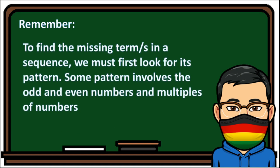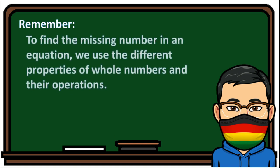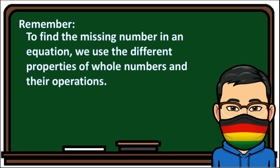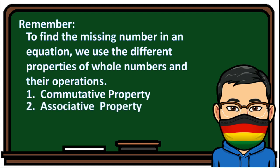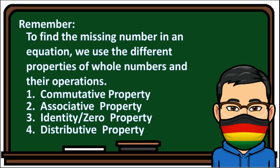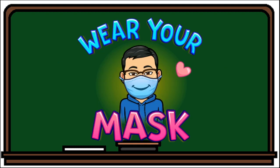Remember: to find the missing term or terms in a sequence, we must first look for its pattern. Some patterns involve odd and even numbers and multiples of numbers. To find the missing number in an equation, we use the different properties of whole numbers and their operations: commutative property, associative property, identity or zero property, and distributive property. Stay safe, always wear your mask. Have a good day.